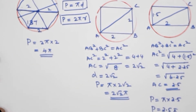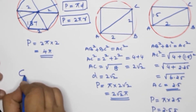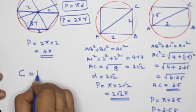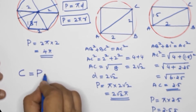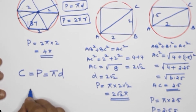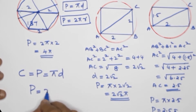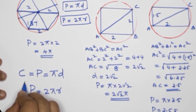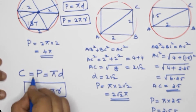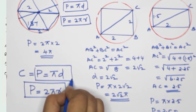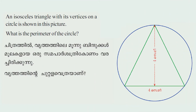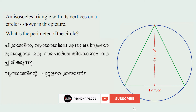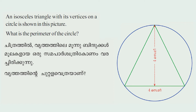We learned the formula here: C is circumference. The perimeter is equal to pi D, and the perimeter is also equal to 2 pi R. We marked this formula. Next is question 3: an isosceles triangle with its vertices on a circle is shown in the picture. What is the perimeter of the circle?